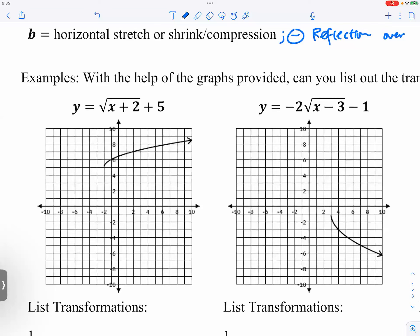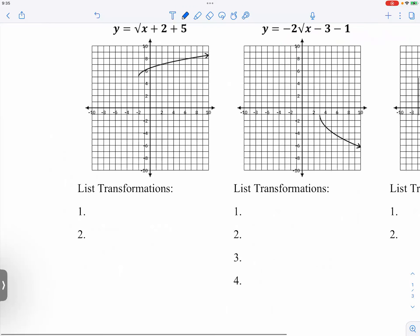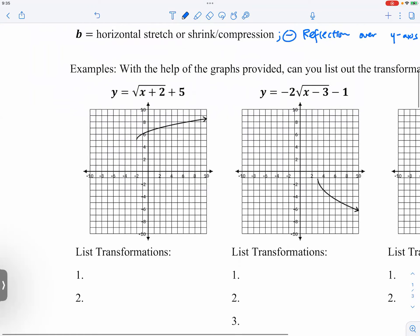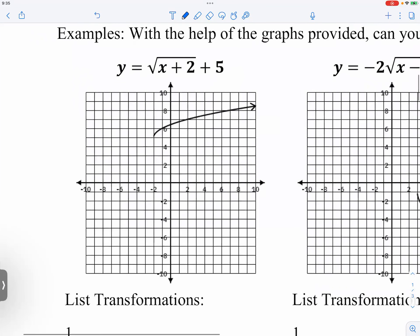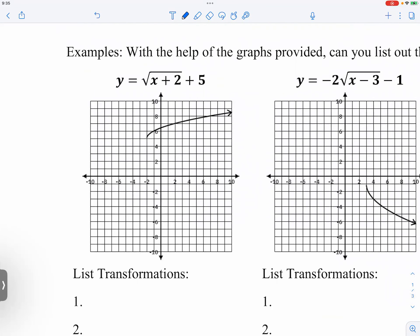At the same time, so now we're going to list the transformations by looking at the equation and the graph together. If you look at the first graph, we have square root of x plus two, and then plus five.